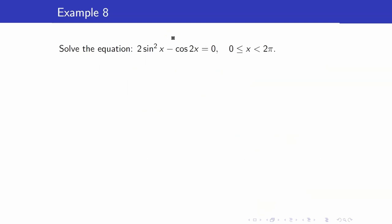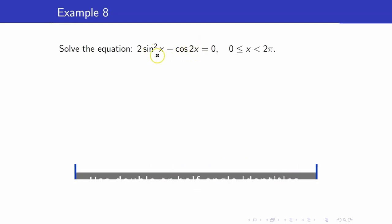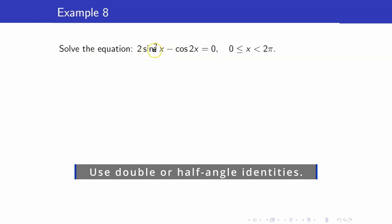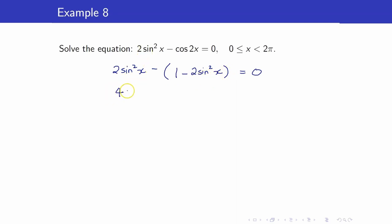In this example, we have two angles: x and 2x, and different trigonometric functions — sine and cosine. The first thing to do is make sure the angles are the same. So I will express cosine 2x with just angle x. Since I already have sine squared x, I will use the identity cosine 2x equals 1 minus 2 sine squared x. That way we end up with just one trigonometric function, sine x. Simplifying gives us 4 sine squared x minus 1 equals 0.